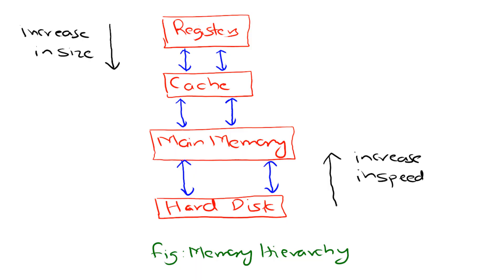Imagine a chef in a busy restaurant. They need frequently used ingredients right at their fingertips, slightly less common items nearby, and common ingredients in the pantry, and everything else in the walk-in freezer. The memory hierarchy in a computer works similarly — it is an arrangement of memory storage based on speed, cost, and capacity.